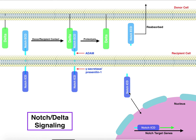The Notch intracellular domain is the main focus, but the Notch extracellular domain can also have functions in the donor cell. For example, the Notch extracellular domain can be endocytosed or reabsorbed into the donor cell, where it acts as a transcription factor, moving into the nucleus and turning on some Notch target genes. These effects are somewhat different from those of the ICD in the recipient cell, because it has a different 3D structure.